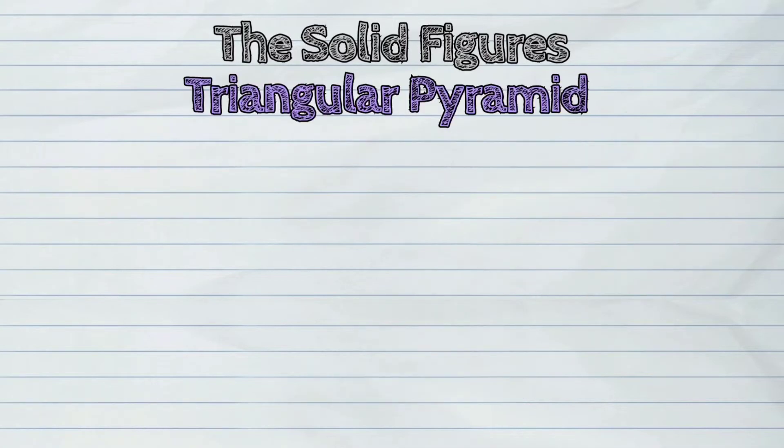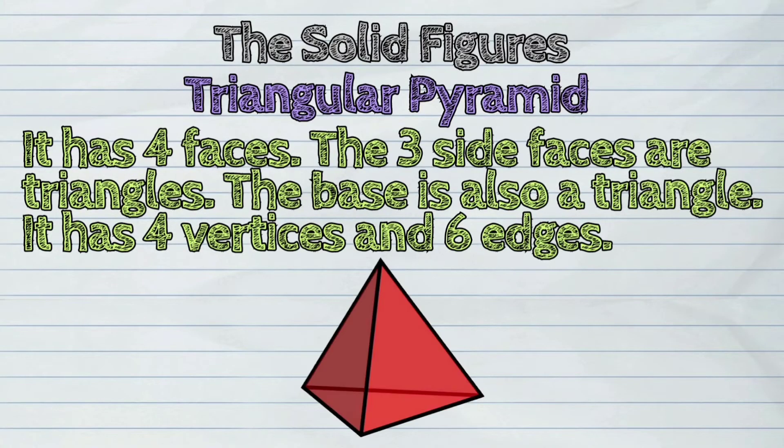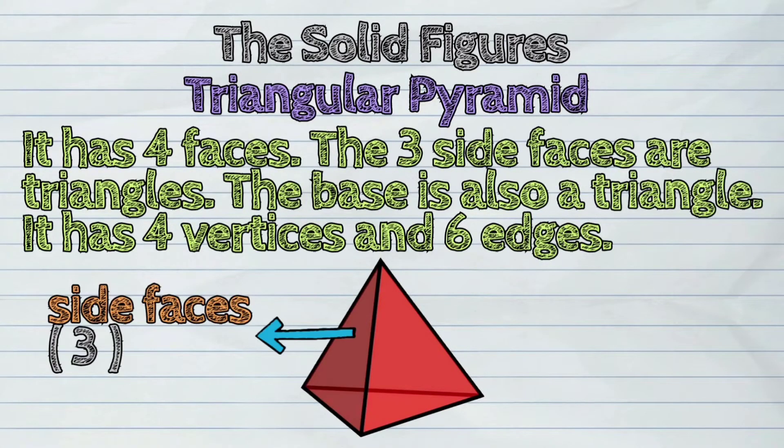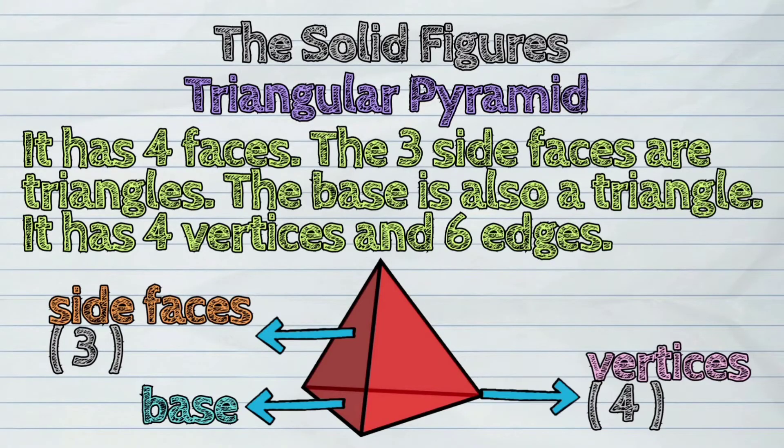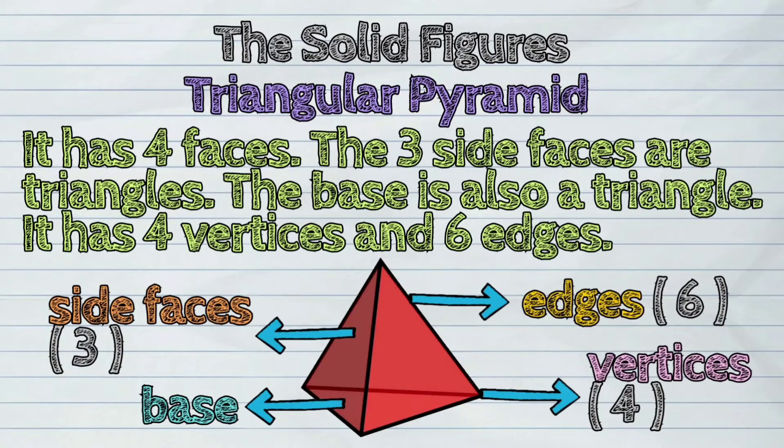Sixth, the triangular pyramid. It has four faces. The three side faces are triangles. The base is also a triangle. It has four vertices and six edges.